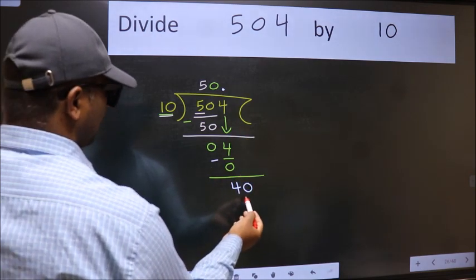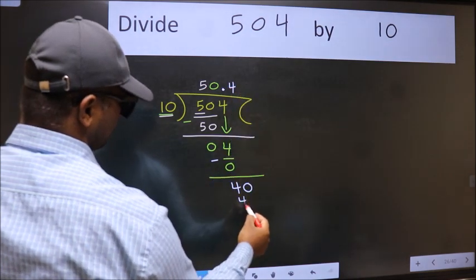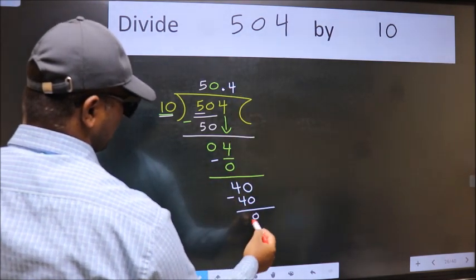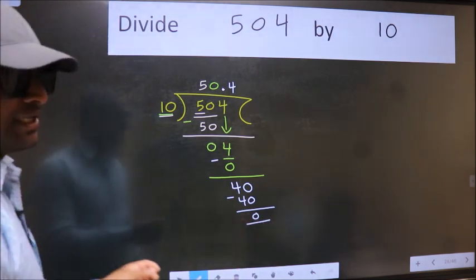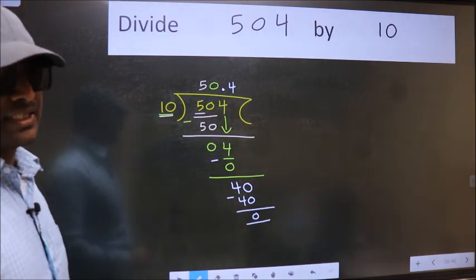So 40. When do we get 40 in 10 table? 10 fours is 40. Now we subtract, we get 0. Did you understand where the mistake happens? You should not do that mistake.